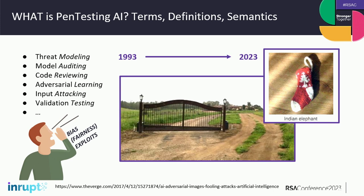You can do threat modeling, adversarial learning, validation testing. I like to call it 'bias exploits' — nobody says that but maybe it'll catch on. In the past it was about ports: port 80 open is bad, port 443 is good. But now what we're talking about is something completely different — where a sock looks like an elephant. You're looking for ways to fool the machine in the same way that used to be port mapping.